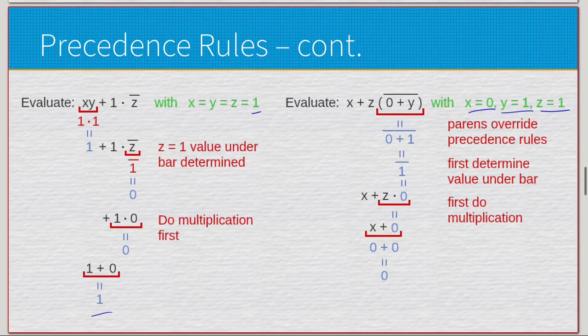Where x=0, y=1, and z=1. Here we have 0+1 because it's in parentheses first, so that's going to be one. We get the complement of that one, which gives us zero. Zero times anything is zero. And we know that x is zero. Zero plus zero is going to be zero.